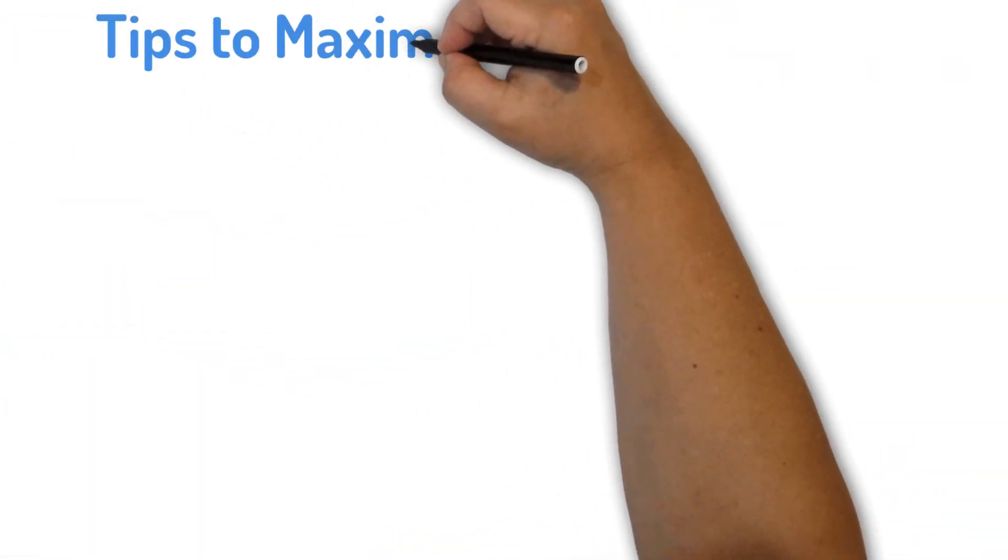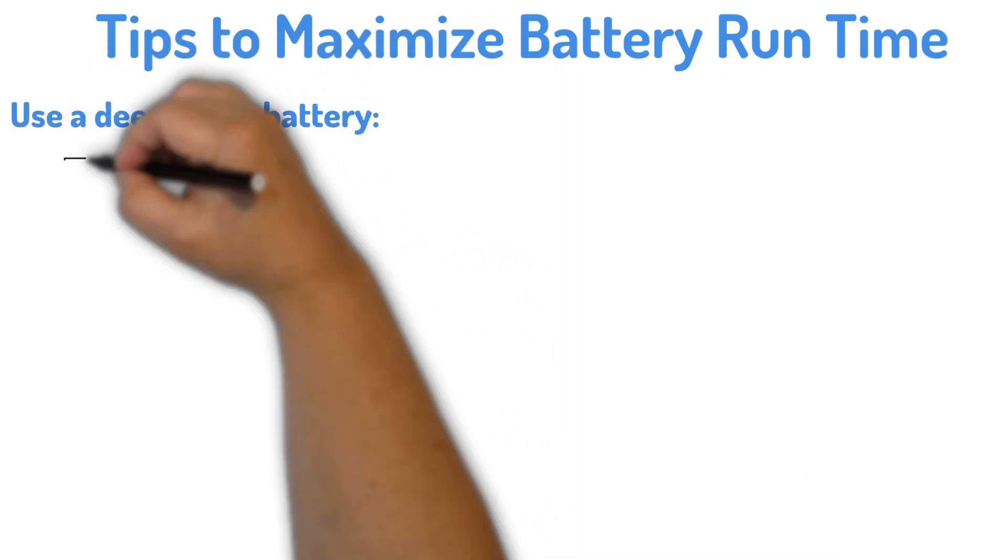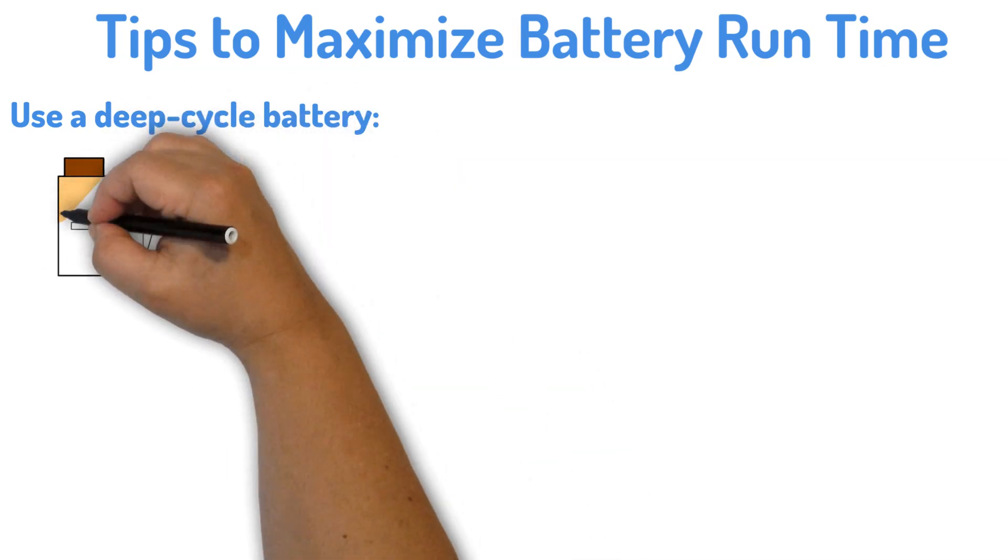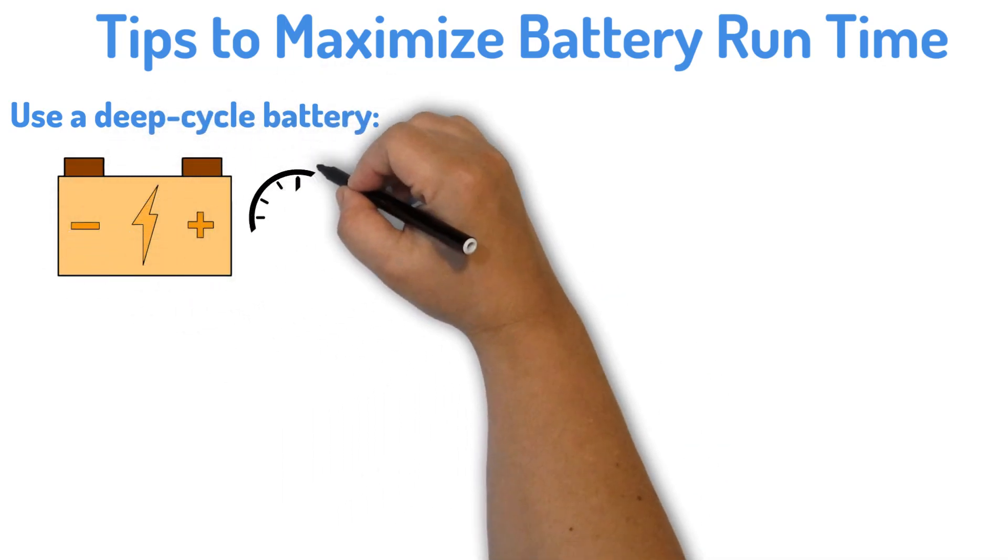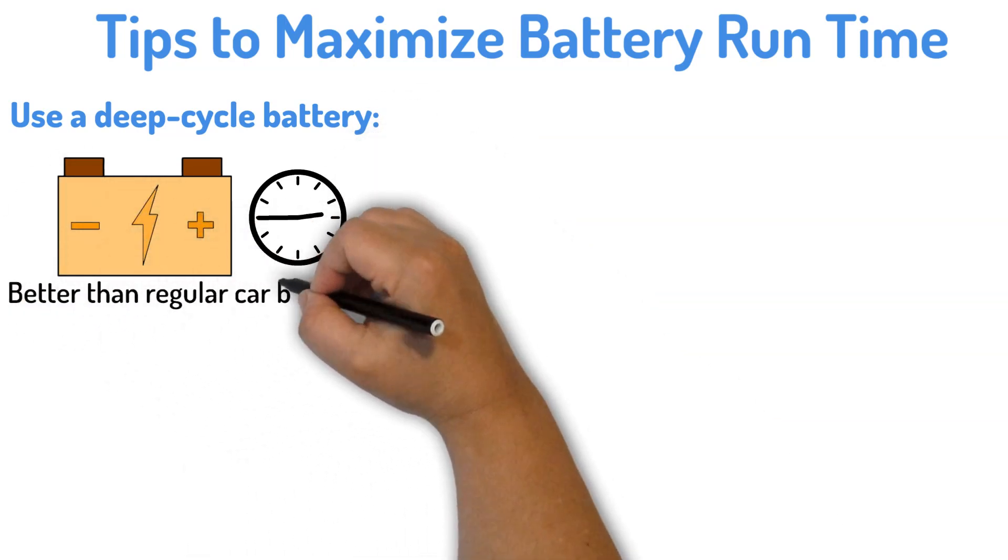Tips to maximize battery run time. To get the most out of your 12-volt battery, here are a few tips. Use a deep cycle battery. Deep cycle batteries are designed for longer discharge periods and can handle the power needs of sump pumps better than regular car batteries.